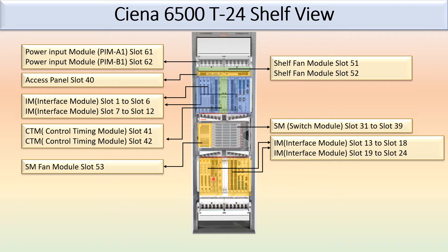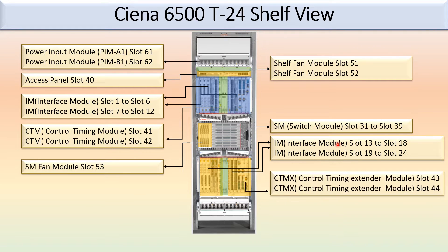On the lower section, there are again interface module slots — slot 13 to slot 18 and slot 19 to slot 24 — all fixed for the interface module. In between there is also a CTMX, which is different from the CTM. This is the control timing extender module, occupying slot 43 and slot 44.